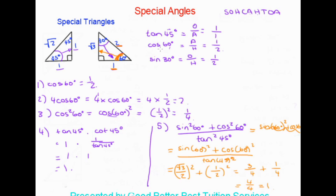Just remember: whenever they give you cos 60, the 60 degrees tells you which triangle to use — the right-hand one — and cos tells you to use adjacent over hypotenuse. Your special triangles will never change, so memorize them and refer back to them whenever you're dealing with angles of 30, 45, and 60 degrees. Hopefully you understand special triangles now.